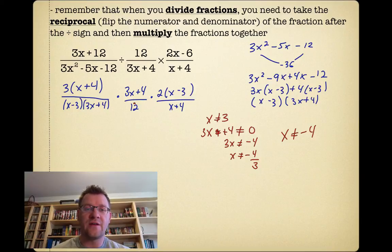Now that we've found our non-permissible values, changed the dividing into multiplying, and factored everything, we can start canceling out factors if they appear on the top and bottom. We have (x - 3) here and (x - 3) there—they cancel out. We have (x + 4) up here and (x + 4) down there—they cancel out. We have (3x + 4) here and (3x + 4) there. Then we're left with 3 times 2, which is 6 divided by 12, which means our final answer when simplified is just plain old 1/2.